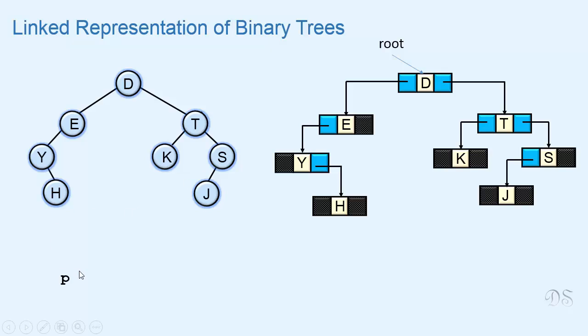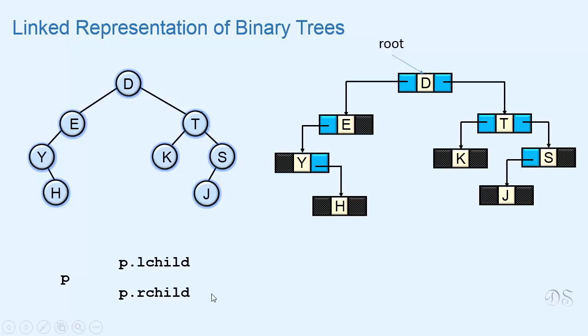Now if we have a reference p that refers to any node of the tree, then p.leftchild will refer to the left child of the node and p.rightchild will refer to the right child of the node.